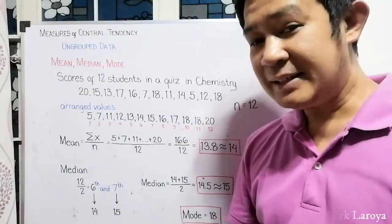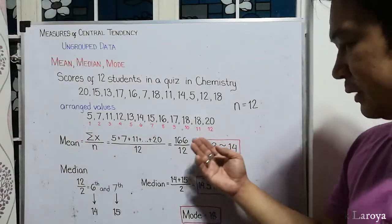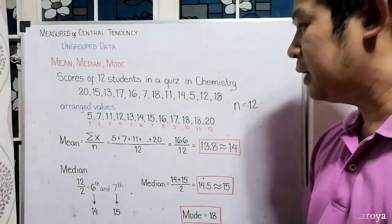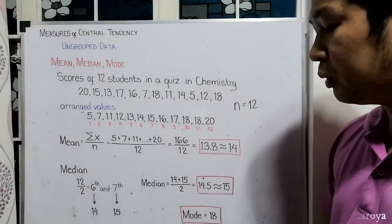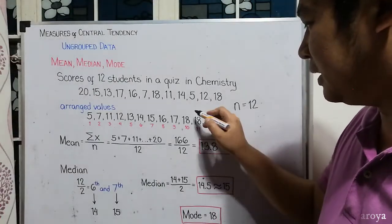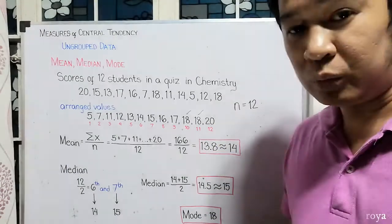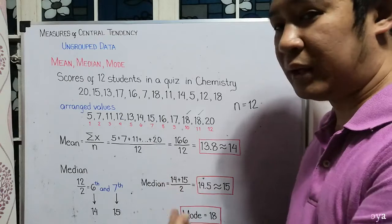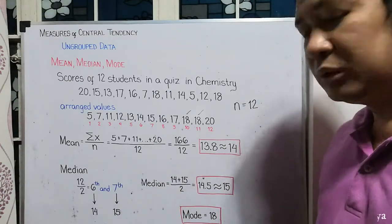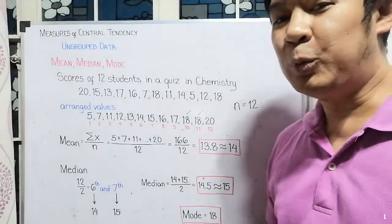And lastly, for our mode, as you can see, since you already arranged this, it is very easy for us to identify what will be the mode of our dataset. We will see here that 18 has the most number of frequency with 2. No other values occurred twice or more. It's only 18. So, the mode of our dataset is now equal to 18.